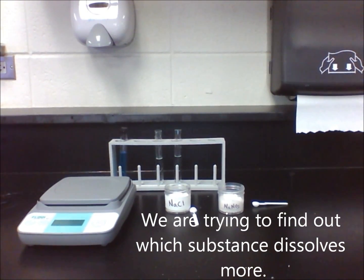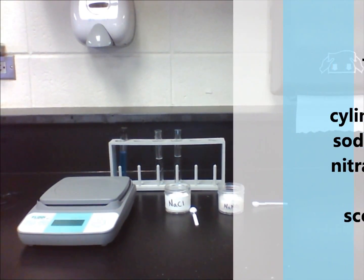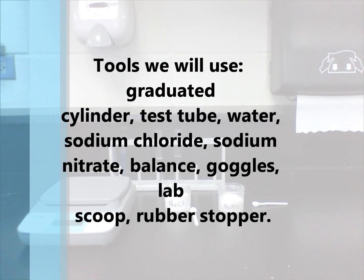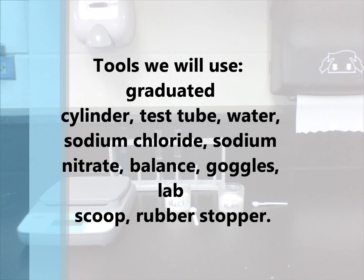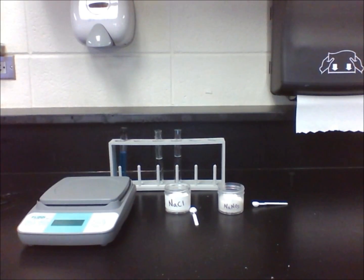We will know when we have a saturated solution when the solute is unable to dissolve any more in the given amount of solvent. We will calculate the amount dissolved by subtracting the new mass of the jar from the original mass of the jar. We are going to find the solubility of salt and sodium nitrate, which substance will dissolve more in equal amounts of water.